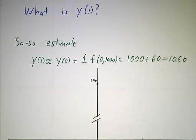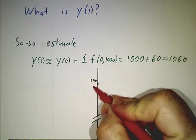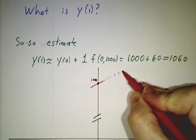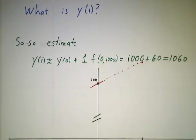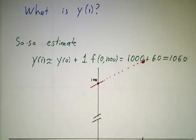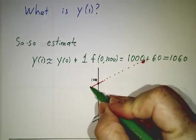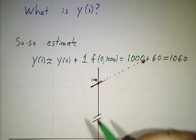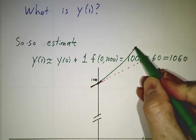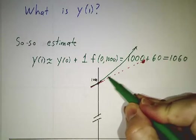Now what's happening here is we are at 1000 and our direction field told us that the slope was 60. And all we did is we took that and went in a straight line till we reached the point 1. And in fact, the actual curve does have a slope of 60 there, but it curves upwards.